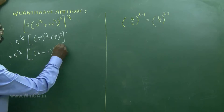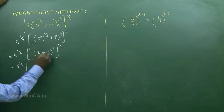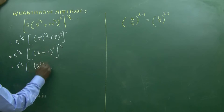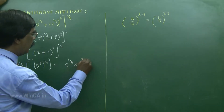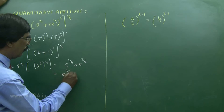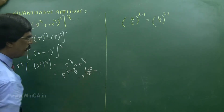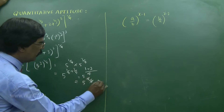Now: 5 to the power of 1 by 4 into (2 plus 3) whole cubed, whole to the power of 1 by 4. That is 5 to the power of 1 by 4 into 5 cubed whole to the power of 1 by 4, giving 5 to the power of 1 by 4 into 5 to the power of 3 by 4. Applying laws of indices: add exponents — 1 by 4 plus 3 by 4 equals 4 by 4 equals 1. The answer is 5.